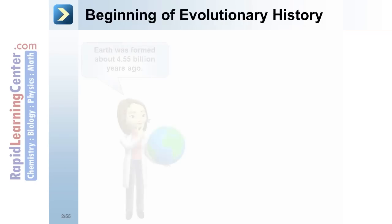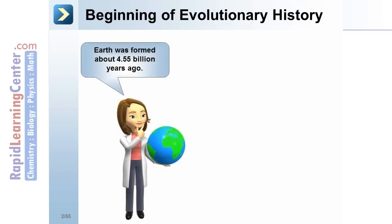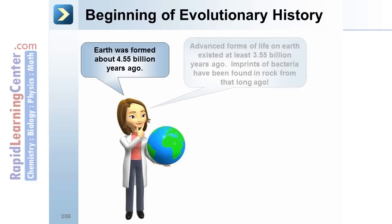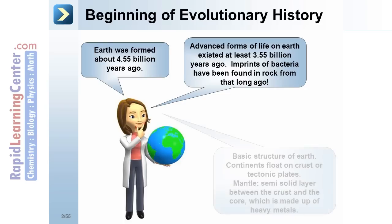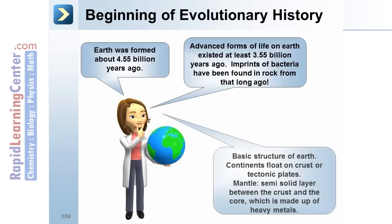Beginning of evolutionary history: Earth was formed about 4.55 billion years ago. Advanced forms of life on Earth existed at least 3.55 billion years ago — imprints of bacteria have been found in rock from that long ago. The basic structure of Earth: continents float on crust, or tectonic plates.